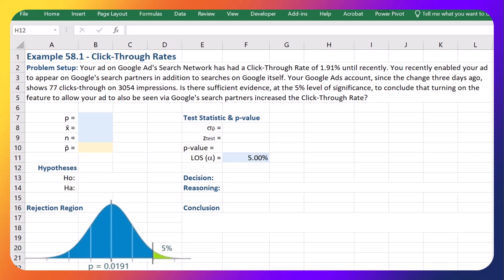In this video, I'm going to show you how to perform a hypothesis test to see if we have increased our click-through rate by changing a feature. In this example we're doing Google Ad search network that we're running a campaign on.